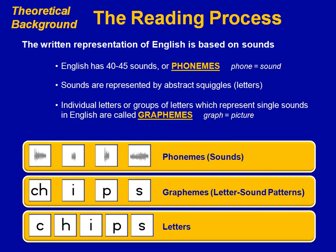The written representation of English is based on the sound structure in our language. English has between 40 and 45 sounds which we call phonemes. These phonemes are represented by abstract squiggles which we call letters. Individual letters or groups of letters represent sounds in the language. These letters or groups of letters which represent sounds are called graphemes.